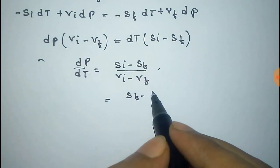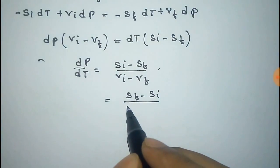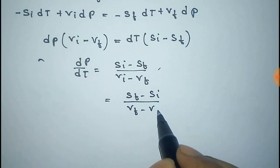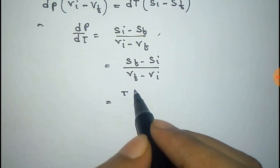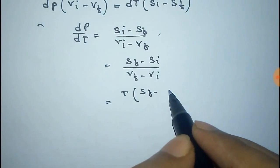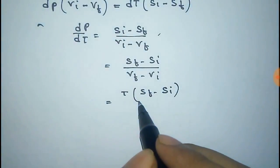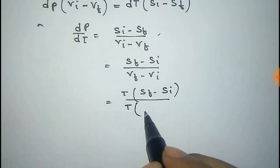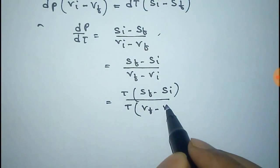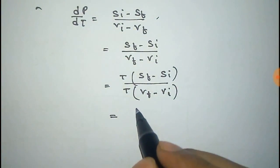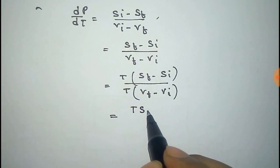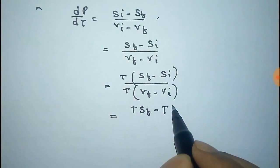Now taking minus common from both sides we get that. Now we multiply T on up and down, so it will be like this, multiplying T with Sf minus Si.